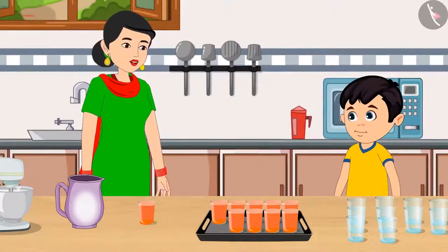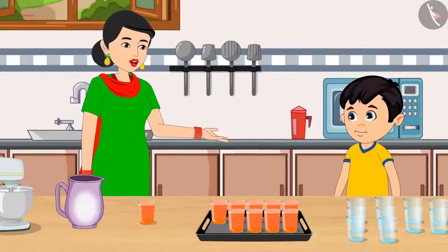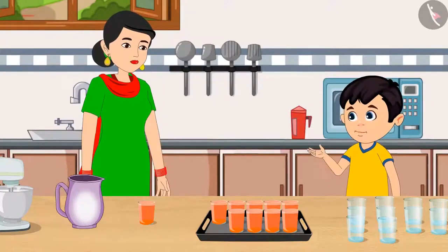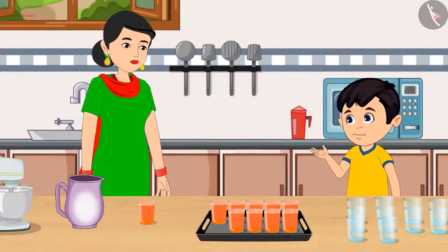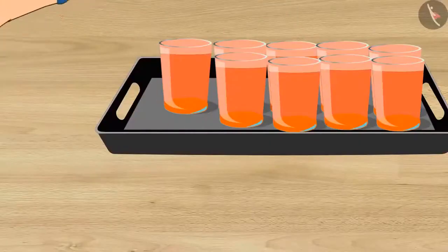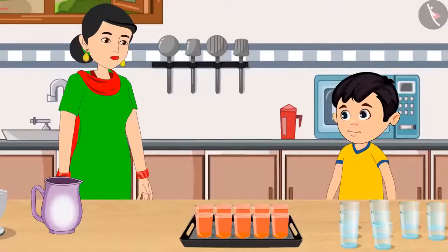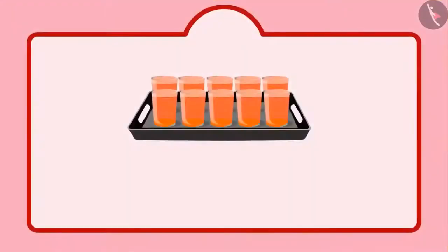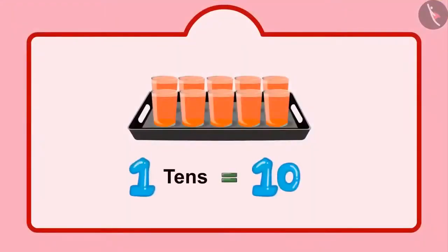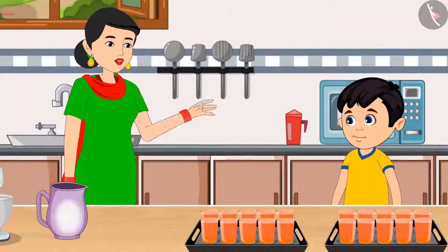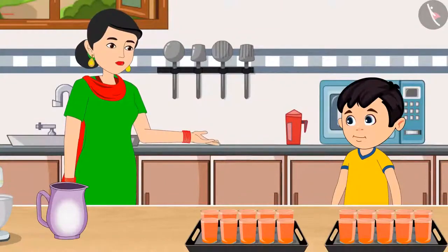So, this means, Chotu, that right now we have 9 units. Yes, Mummy, I remember. Now, if we put one more glass in this plate, it will be a group of 10 glasses. And we call it as one 10. You are absolutely right, Chotu. Here you go, Chotu. Your sherbet is ready.